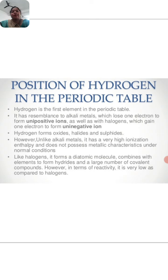Hydrogen is the first element and shows characteristics from oxides, halides and sulfides. It forms unipositive or uninegative ions in the form of ionization enthalpy and does not possess metallic character under normal conditions. It also shows halogen compound. In terms of reactivity, it is very low as compared to the halogen.